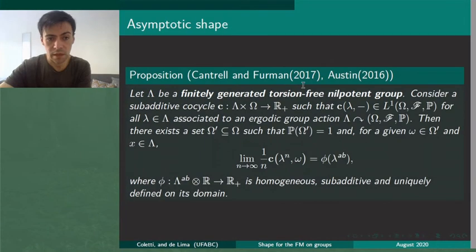Now, we state a proposition of Austen and later improved by Cantrell and Fermin which is a subadditive ergodic theorem for finitely generated torsion-free nilpotent groups. It can be applied for our Γ'. C is a subadditive cocycle which is integrable.